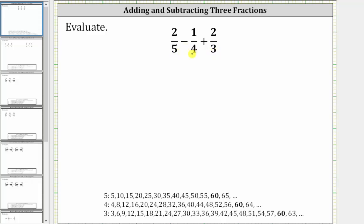However, we do have to have a common denominator to add and subtract fractions. To find the least common denominator, we need to find the least common multiple of five, four, and three.